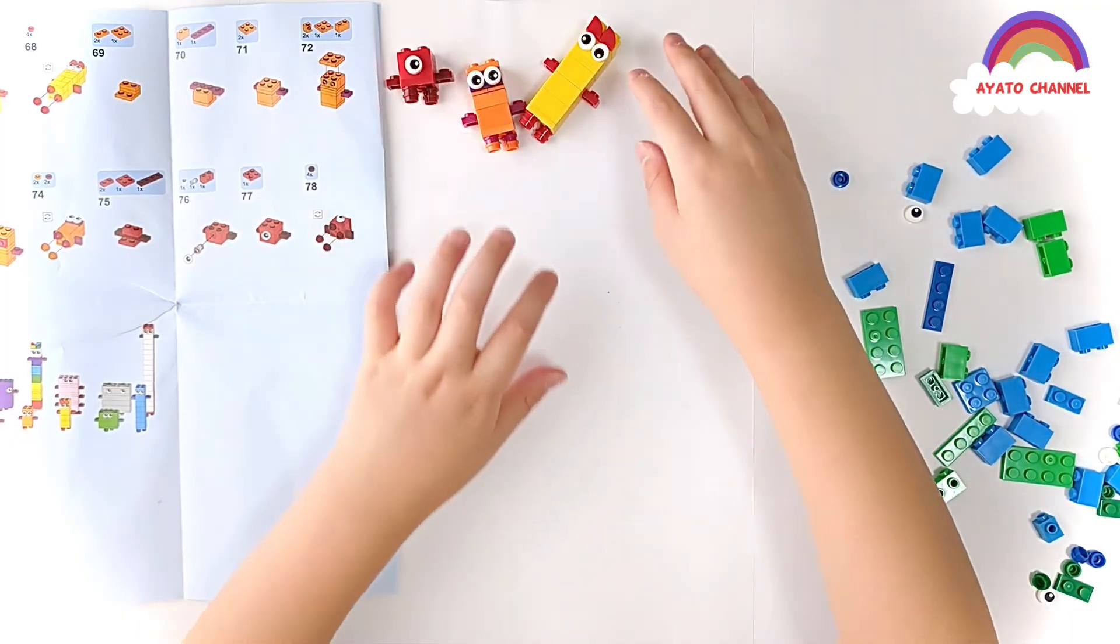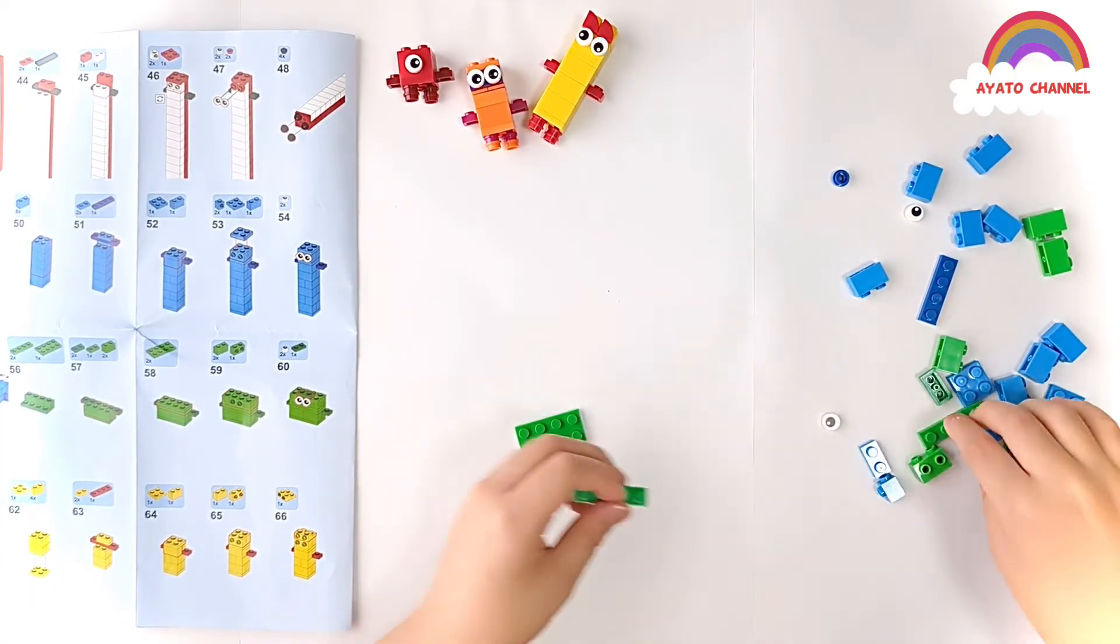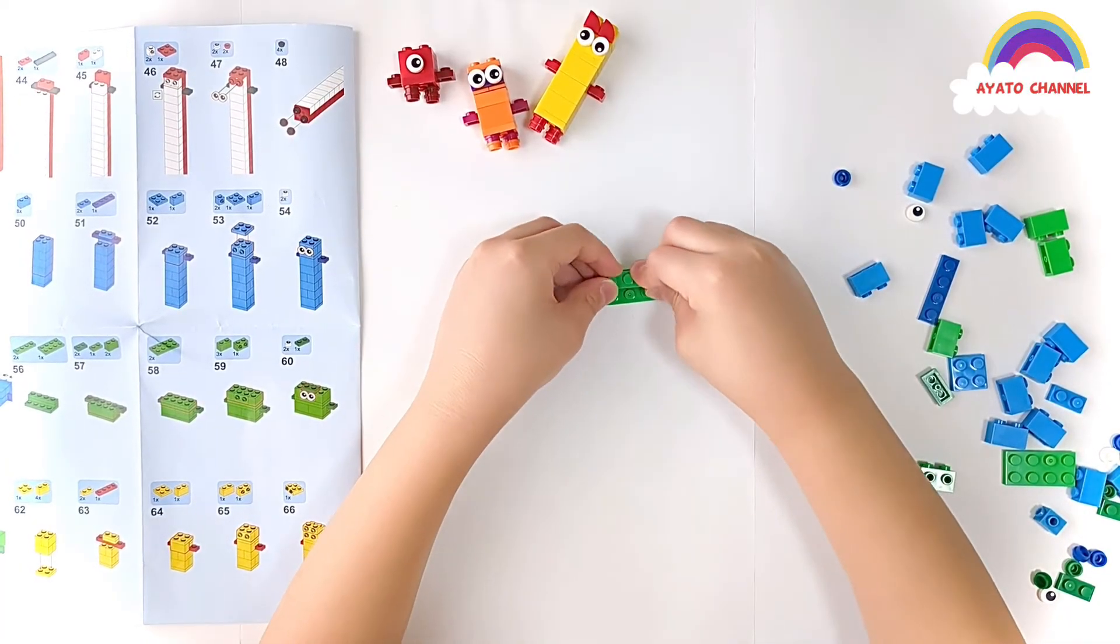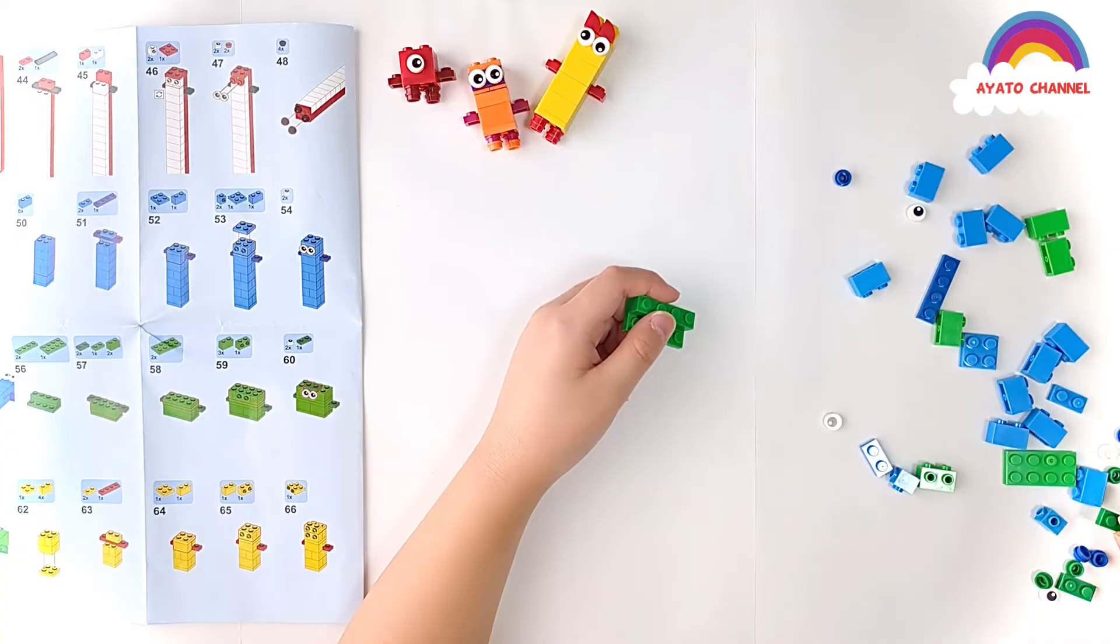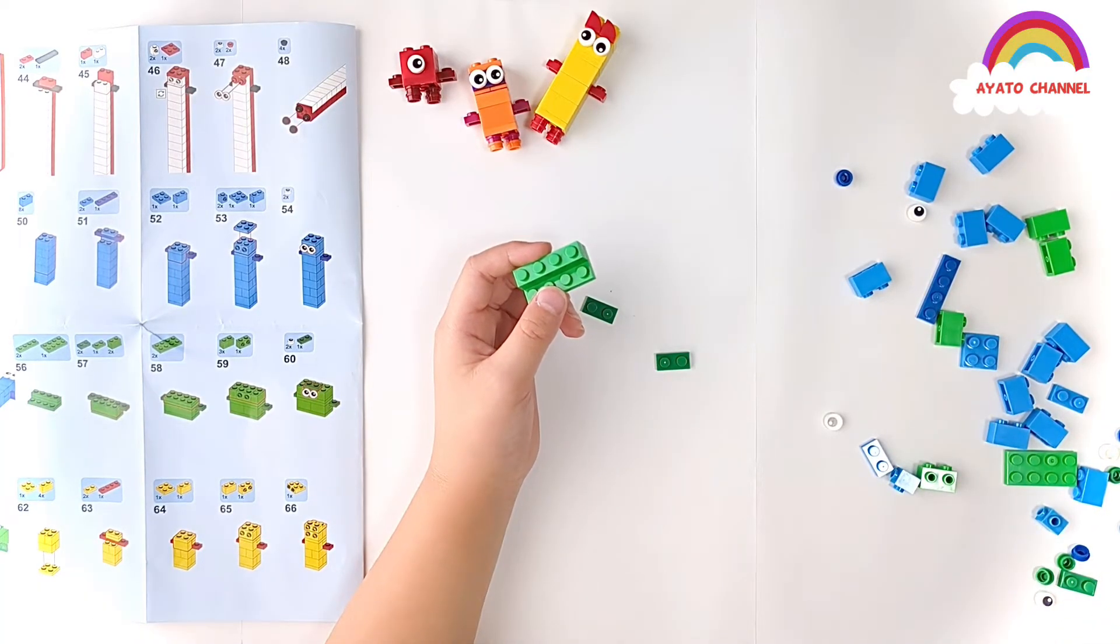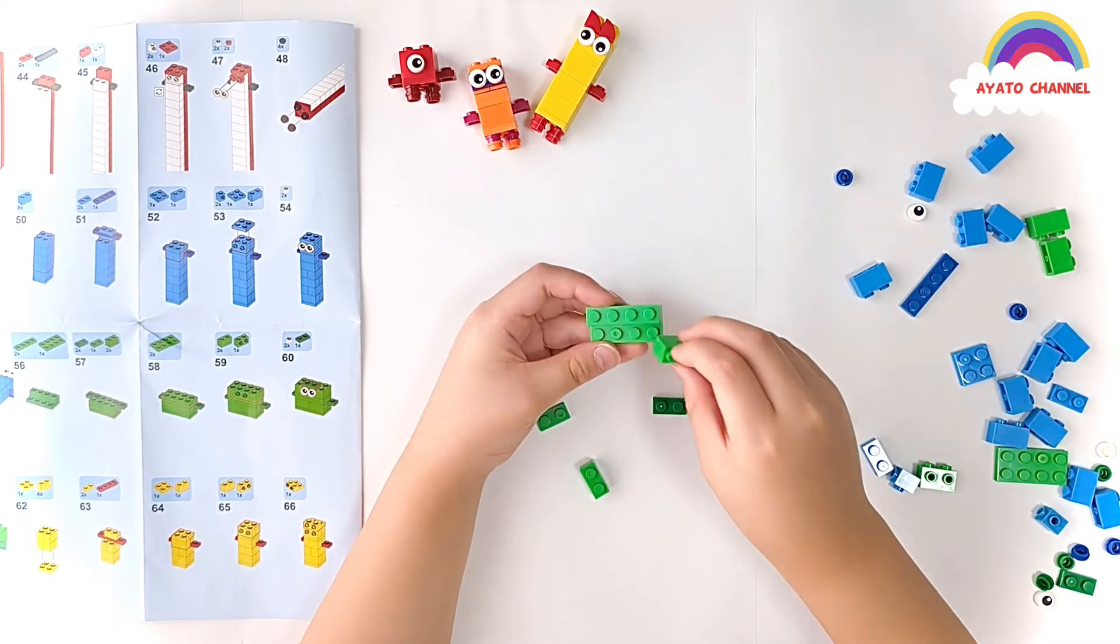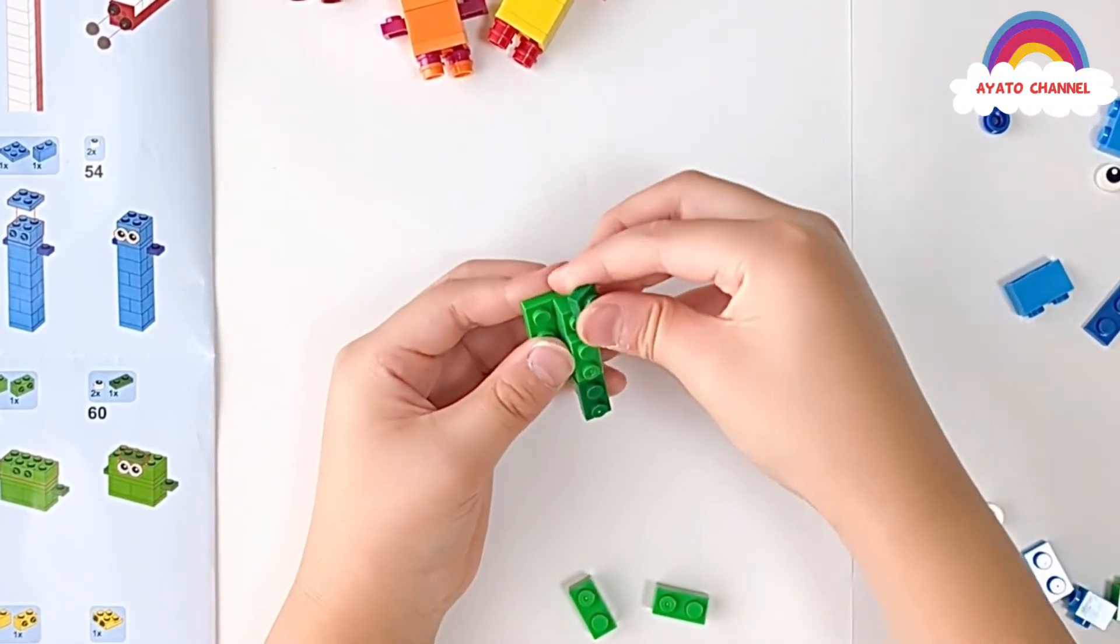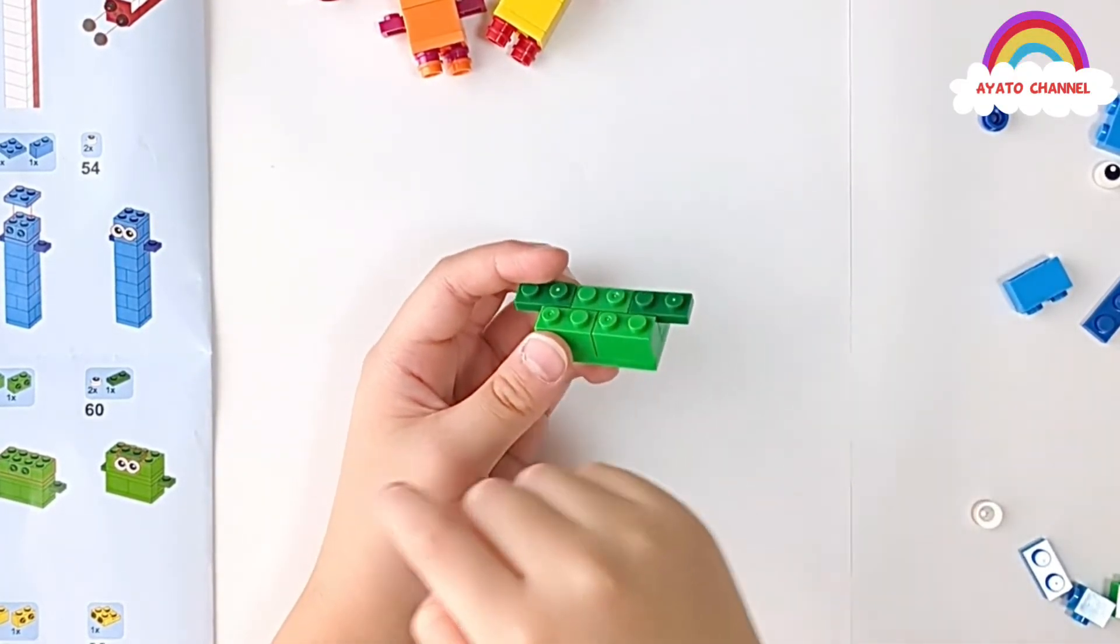Now next is number four. Four is made of half. Four green blocks. So next we need these birds. Now here. Then we need this. This. And this. So I think it's here. And there. And here. There. See? So next is this step.